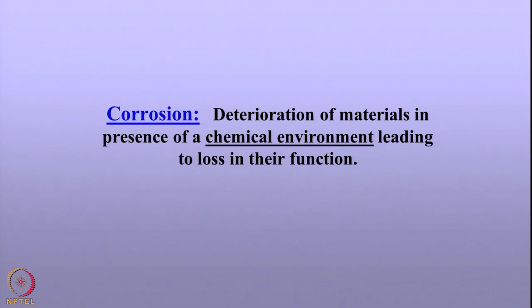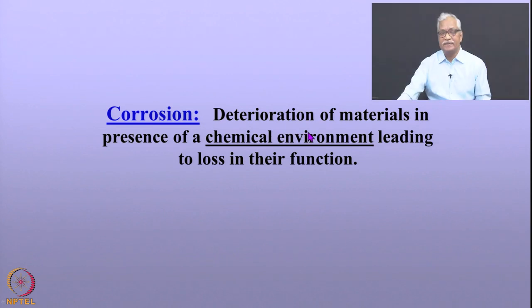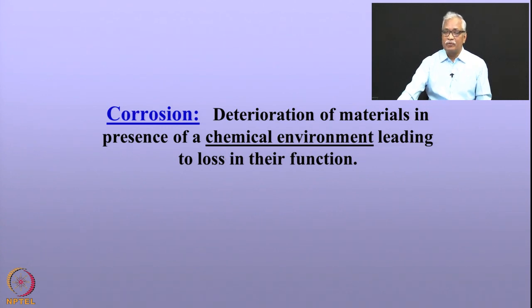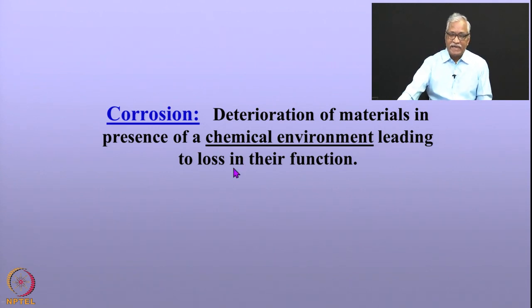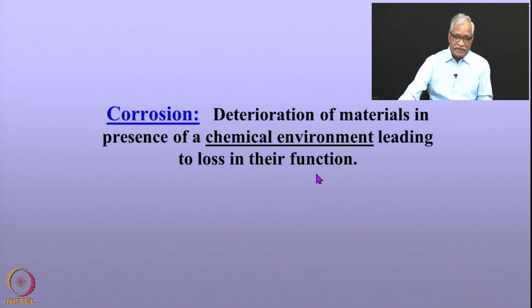To define corrosion: it is the deterioration of materials in the presence of a chemical environment, leading to loss in their functions. The failure is due to the chemical environment that the materials are exposed to. The failure can happen otherwise too — mechanical failures, gamma radiation, fire — but when we talk about corrosion, it is specifically a chemical environment that leads to failure. When I say failure, it is not necessarily structural integrity loss; it can also mean loss in the function of the desired component.